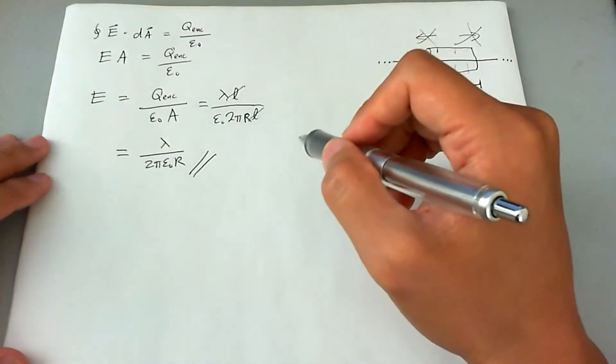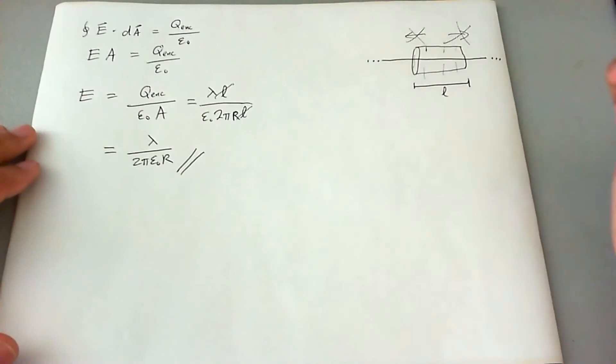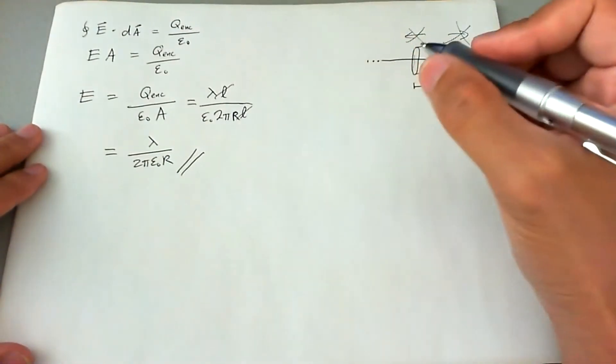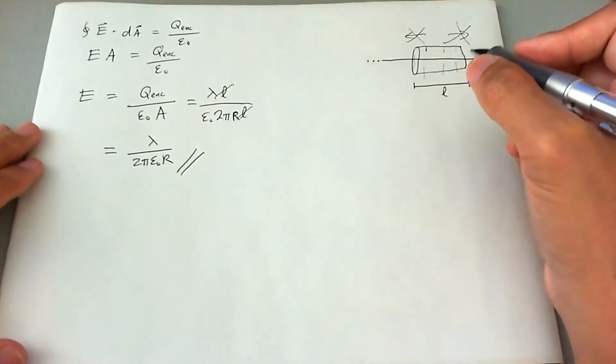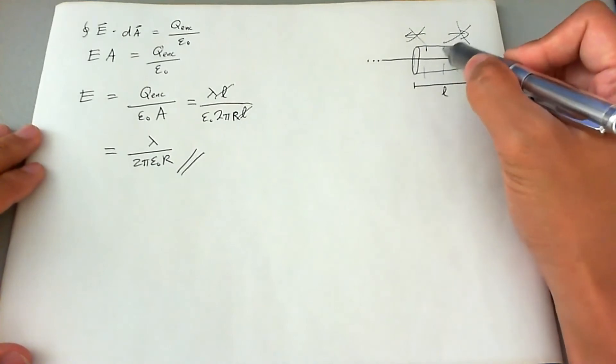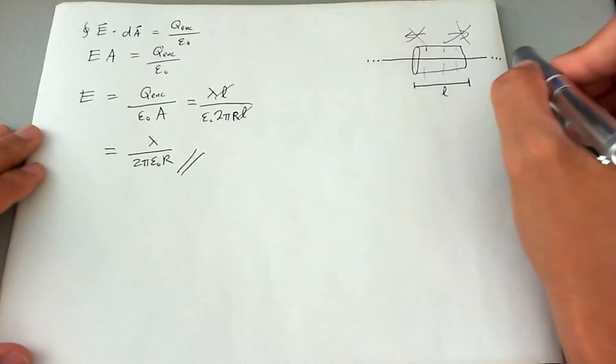Now, the reason why it's consistent with other physics equations is because we already have a similar equation for the E field near an infinite line charge.